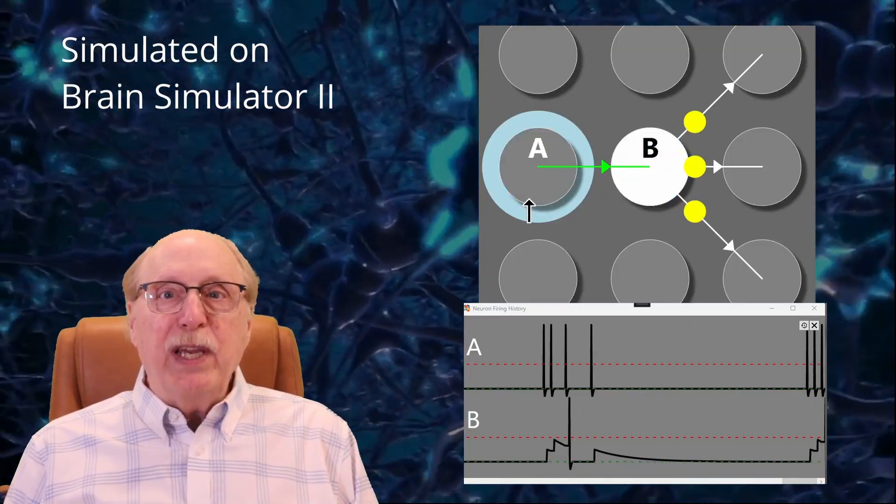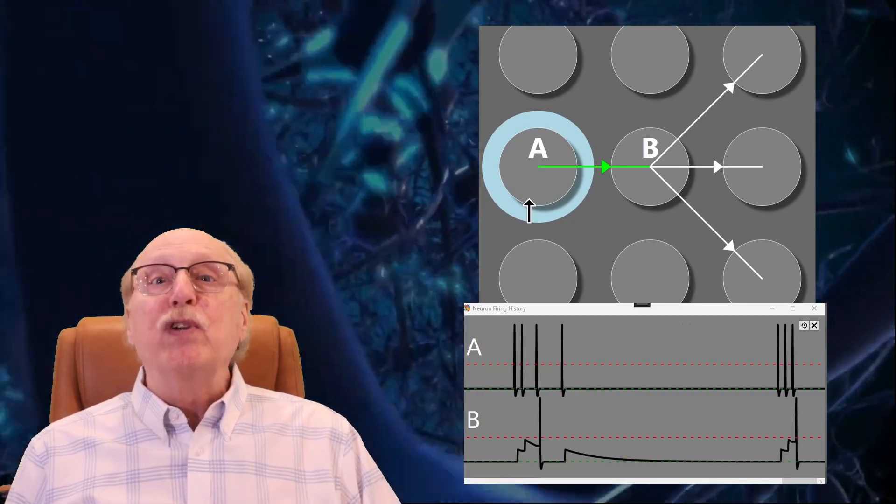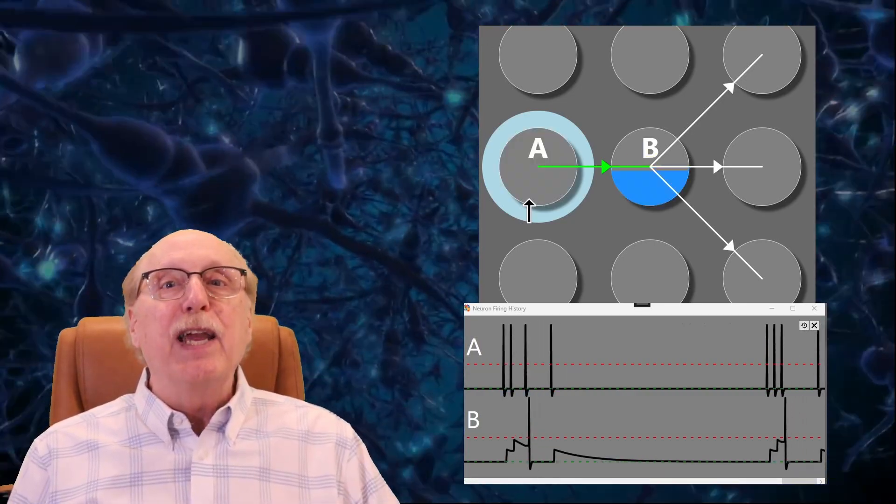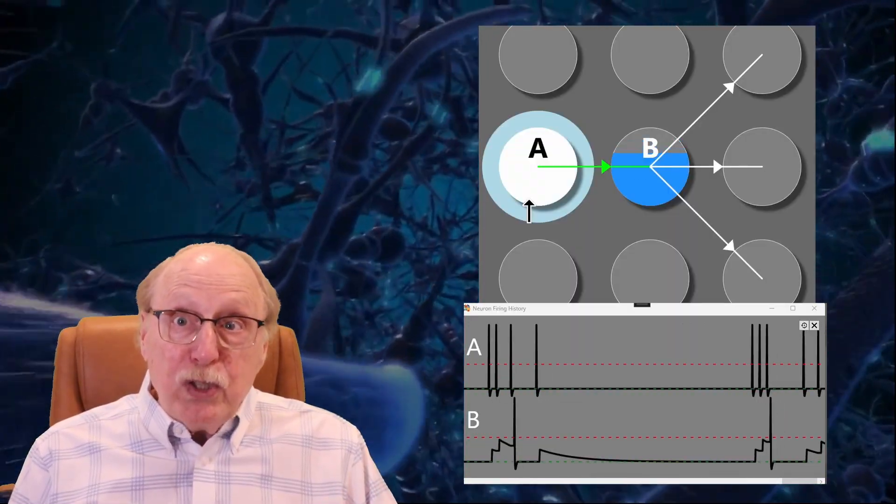The spike travels down the axon. When the spike reaches the axon's synapses, it triggers the release of neurotransmitters into the tiny gaps between neurons, passing the signal to the target or post-synaptic neuron.